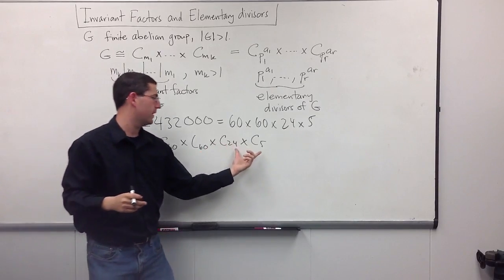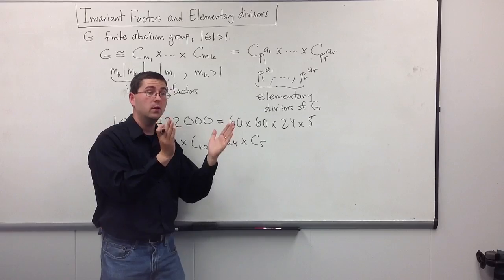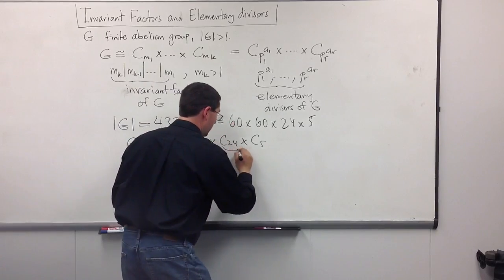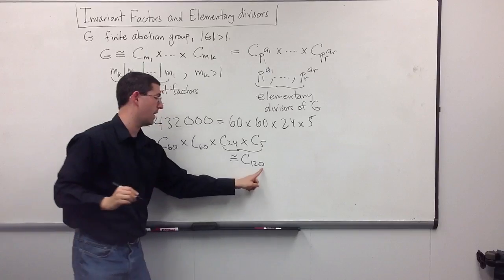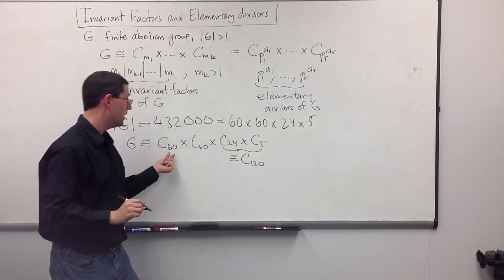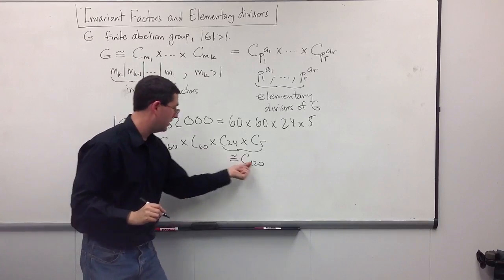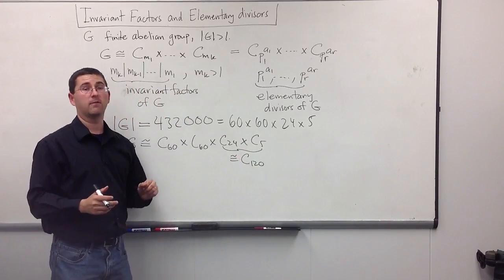So, how would we be able to rewrite this so that we did have invariant factors? Well, a simple observation is that 24 and 5 are relatively prime. So, we could just put those together. We could write this as C24 times 5, which is C120. And, now we would have 60, 60, 120. 60 does divide 60. 60 divides 120. We win. So, these must be the invariant factors.